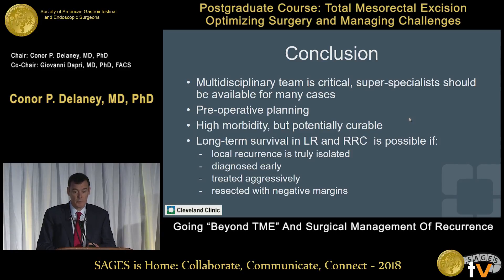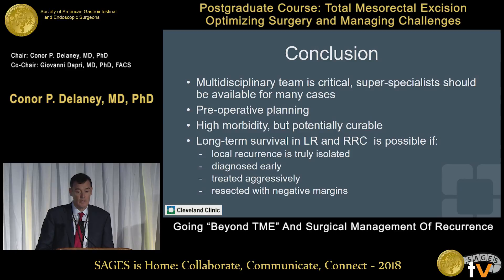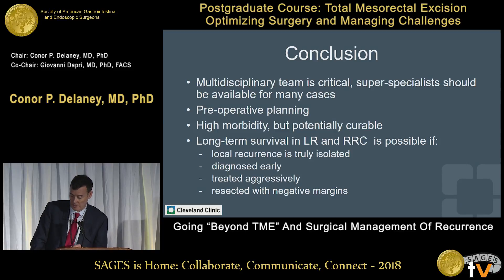In conclusion, a multidisciplinary team is critical. You need super-specialists available. You've got to plan this preoperatively — there should be no intraoperative surprises. Yes, these are high-morbidity cases, but as long as you predict you can get a negative margin, these are patients we can sometimes offer cure to. If it's isolated, diagnosed early, and treated aggressively with a goal of negative margins, these patients can do very well.